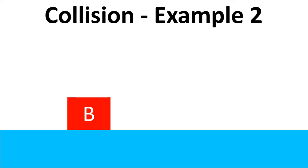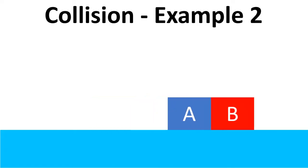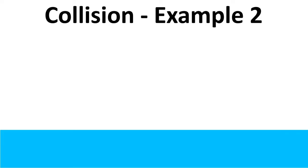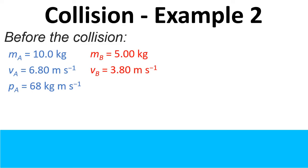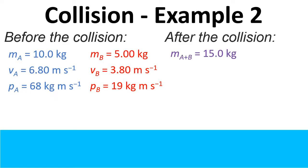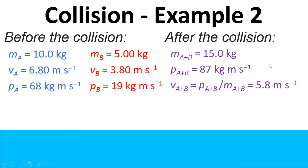In the second example, we've got two blocks again but they're both in motion before the collision, and then they stick together and move off together after the collision. Block A has a mass of 10 kilograms and a velocity of 6.8 meters per second, giving a momentum of 68 kilogram meters per second. Block B is traveling at 3.8 meters per second with a mass of 5 kilograms, giving a momentum of 19 kilogram meters per second. After the collision the combined mass is 15 kilograms and the combined momentum is 68 plus 19, which gives 87 kilogram meters per second. Rearranging the momentum equation gives a velocity of 5.8 meters per second.